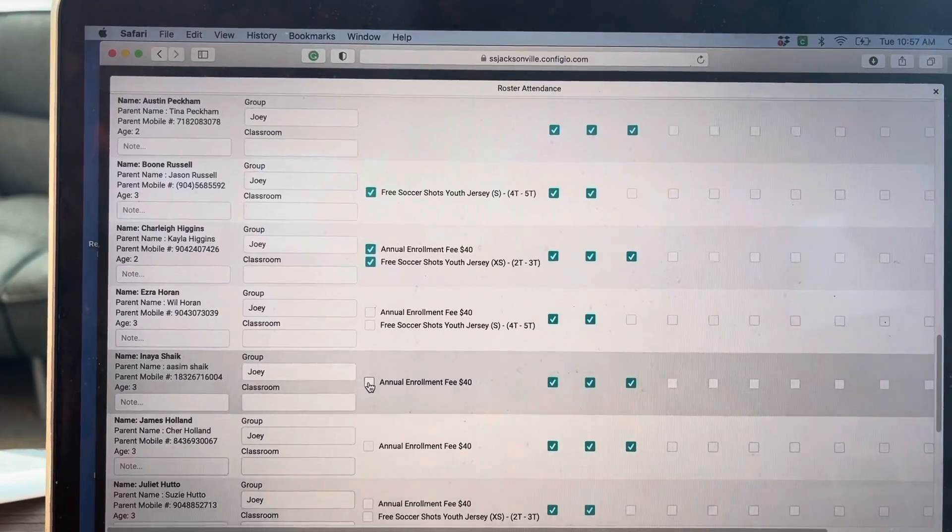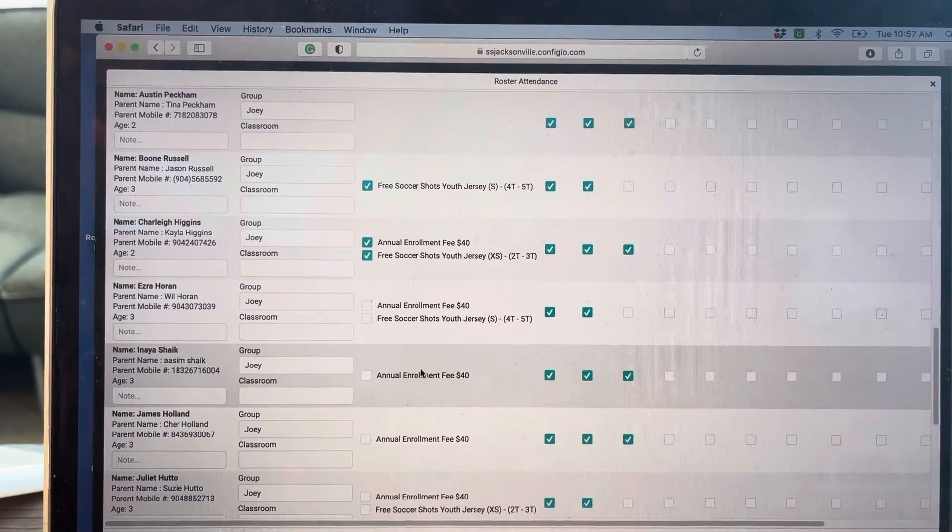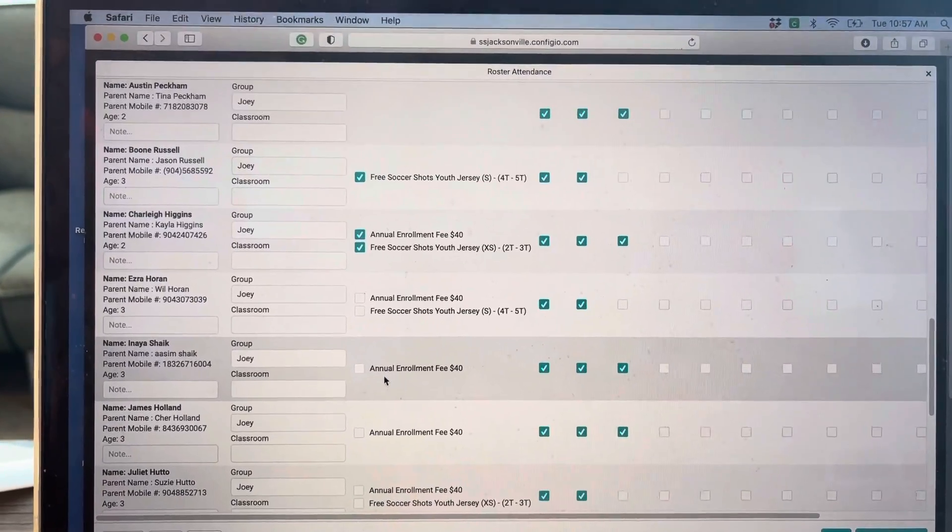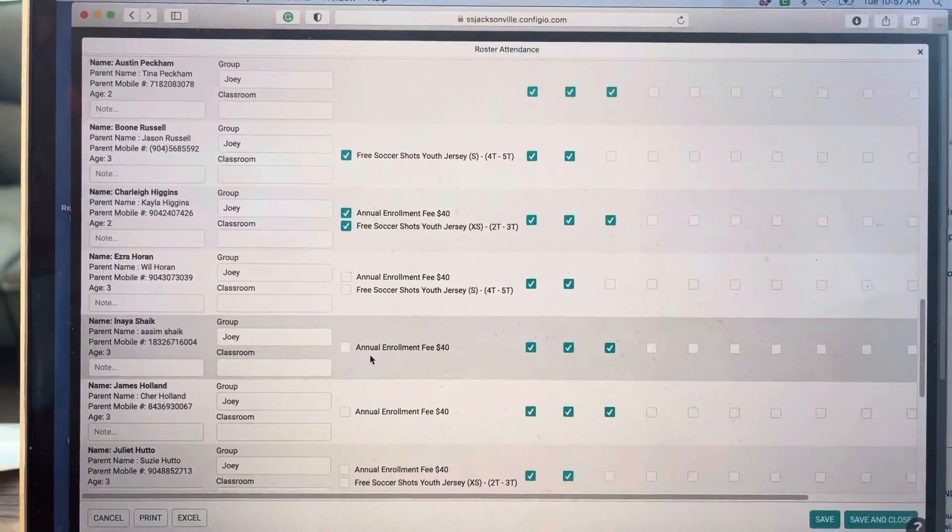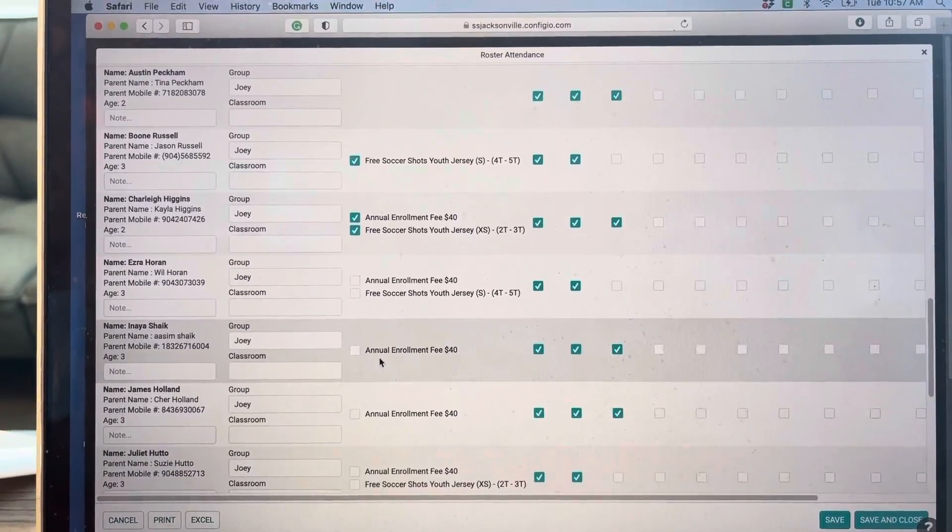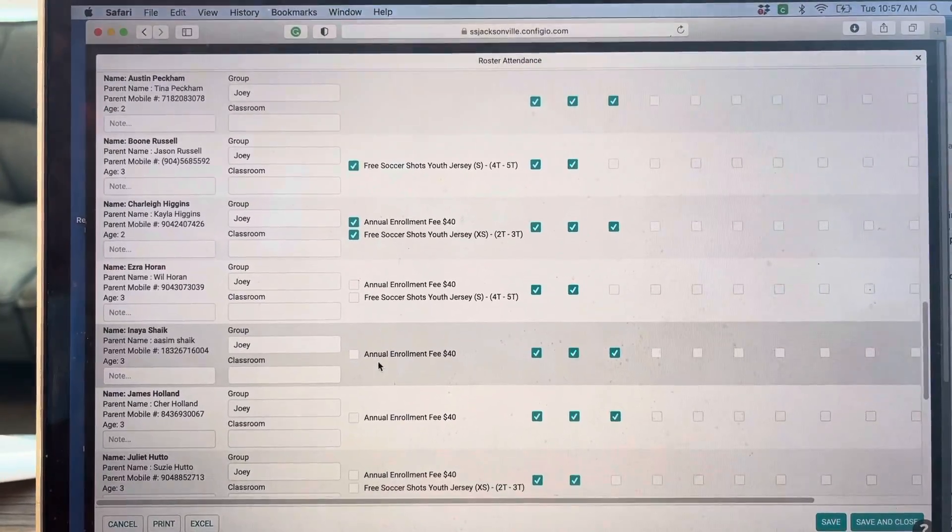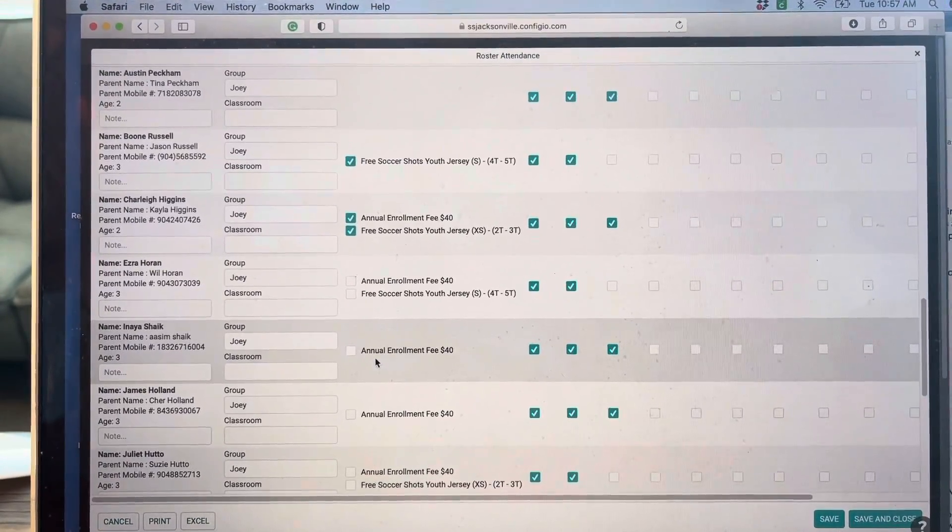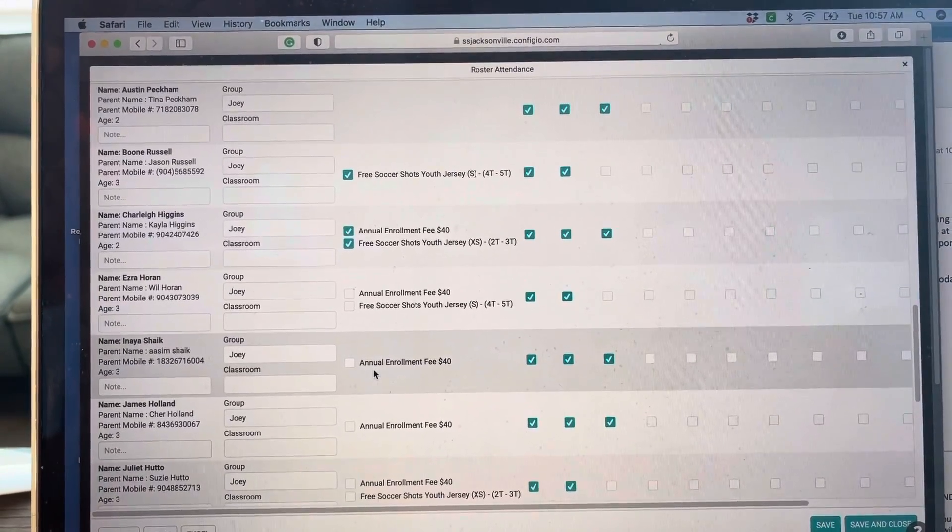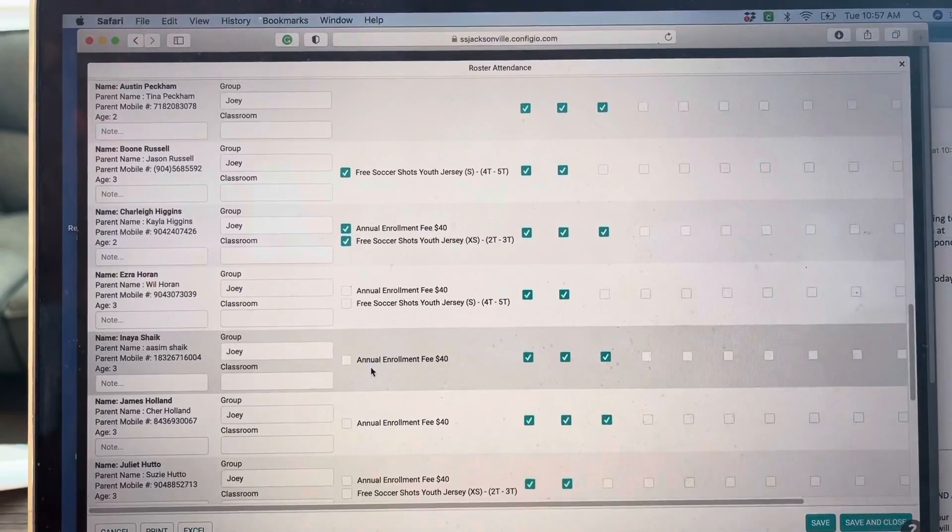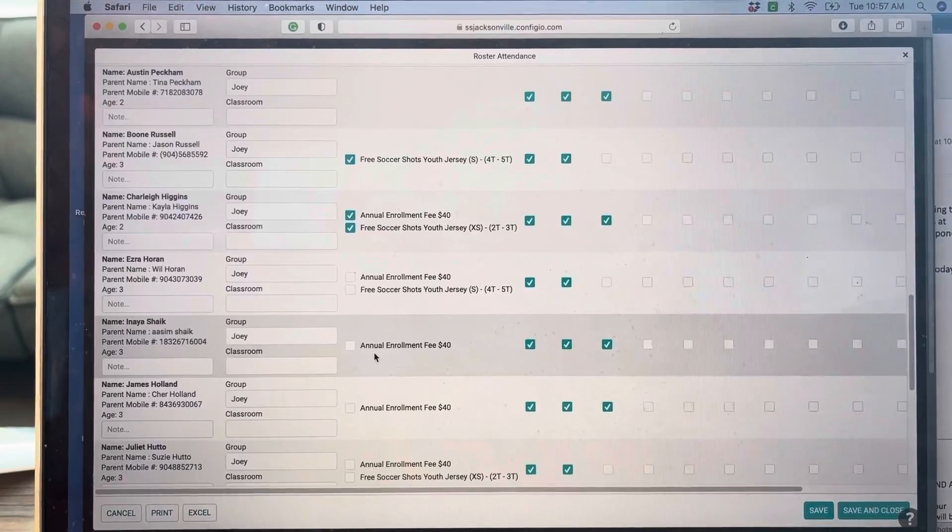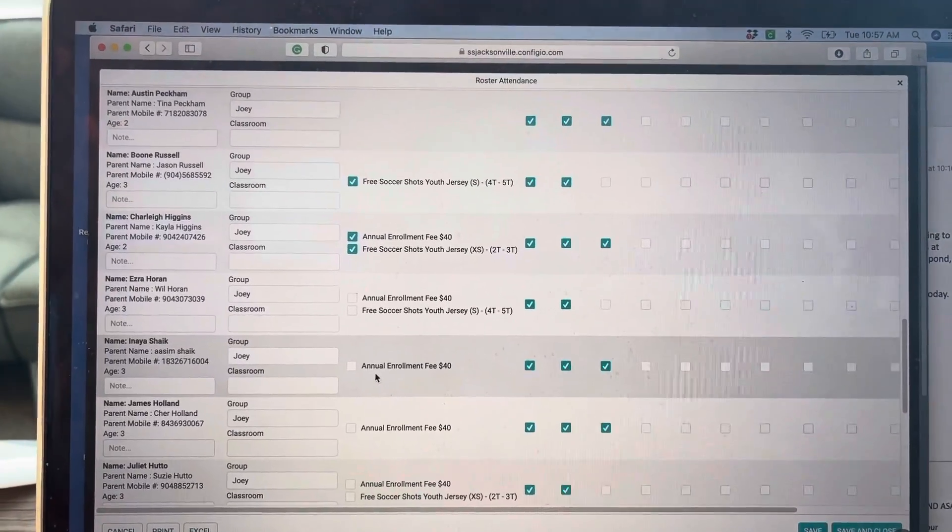Worst case scenario: they have annual enrollment fee but no jersey size. Even on your printout, they won't have a jersey size. Here's the rule for that. If they're two or three years old, they get a size extra extra small jersey. If they're four or five years old, they get an extra small jersey. And if they're six and up, you just size them up - whatever shirt seems right is the shirt you'll give them. It normally starts at a small and goes all the way through a large.